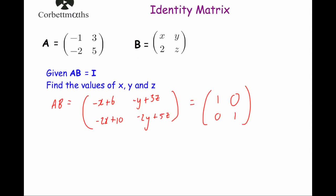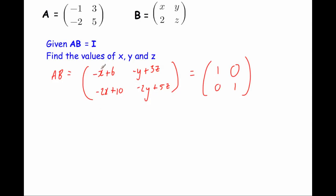Let's work out x first from the top left: minus x plus 6 equals 1. Subtracting 6 from both sides gives minus x equals minus 5, and multiplying through by minus 1 gives x equals 5. We can verify using the bottom left element: minus 2 times 5 plus 10 is minus 10 plus 10 equals 0, which checks out. So x equals 5.